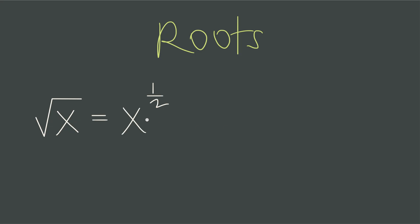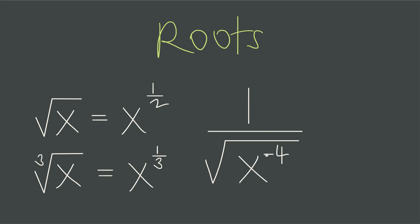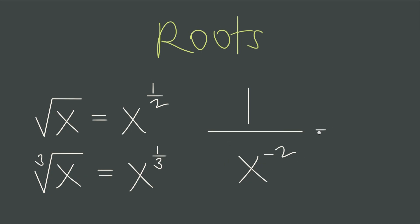The last issue is what to do with negative exponents mixed with square roots or roots in general. Remember that the square root of x is the same as x to the 1/2, and the cube root of x is x to the 1/3. So when we have something like the square root of x to the negative 4, we rewrite the square root using the exponent of 1/2. Now we can use the power of a power rule and multiply the exponents: negative 4 times 1/2 equals negative 2. Then we follow the instruction of the negative exponent — move x to the negative 2 to the denominator and rewrite it as 1 over x to the positive 2.